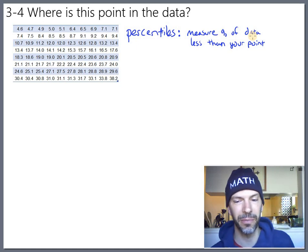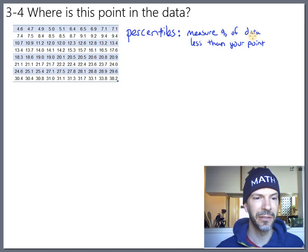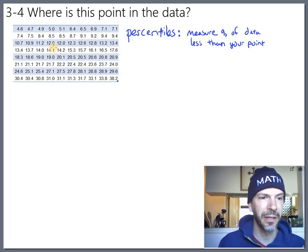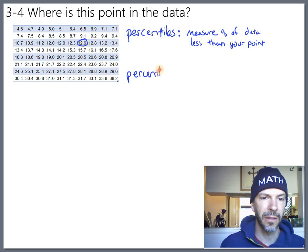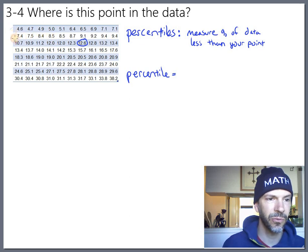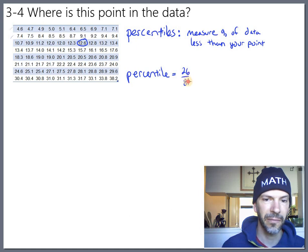So percentile is specifically the percent of data that's less than your point. Let's take a look at these 80 dudes here with their body fat. I'm just going to pick one out kind of at random here. Let's say this guy right here that's got 12.6 percent body fat. Let's look at his percentile. You'd want to figure out how many numbers are less than him. These are arranged in rows of ten, so there's 10, 20, 21, 22, 23, 24, 25, 26. So there's 26 people that have body fat that's less than him.